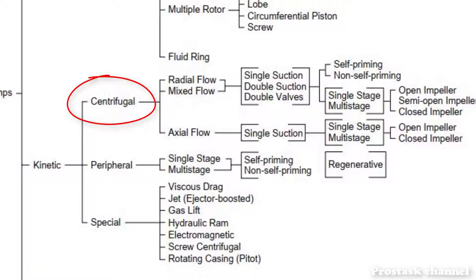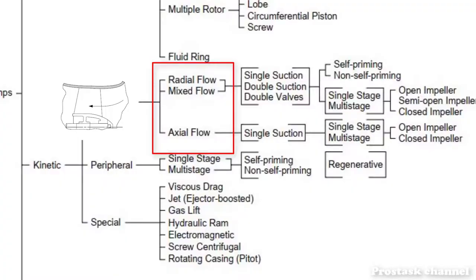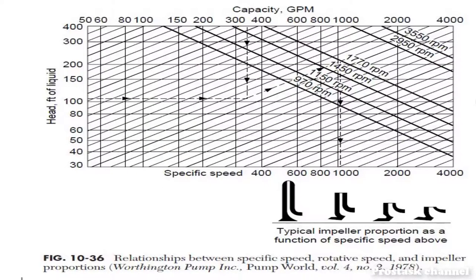The impeller types of centrifugal pumps are separated into radial flow pumps, axial flow pumps, and mixed flow pumps, depending on the required flow rate and required head of delivery.